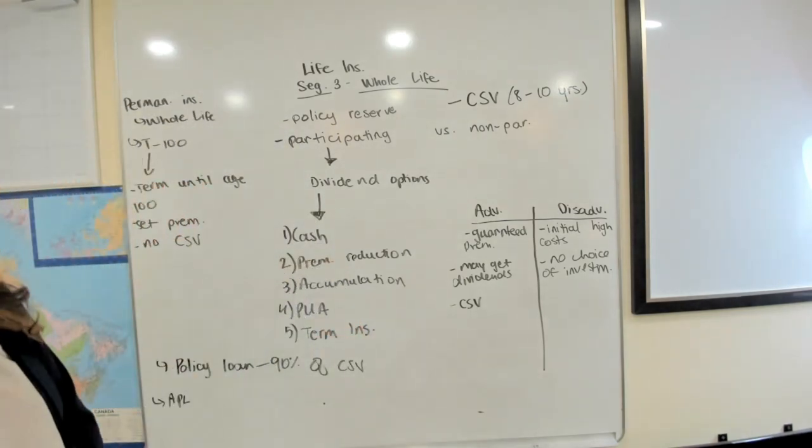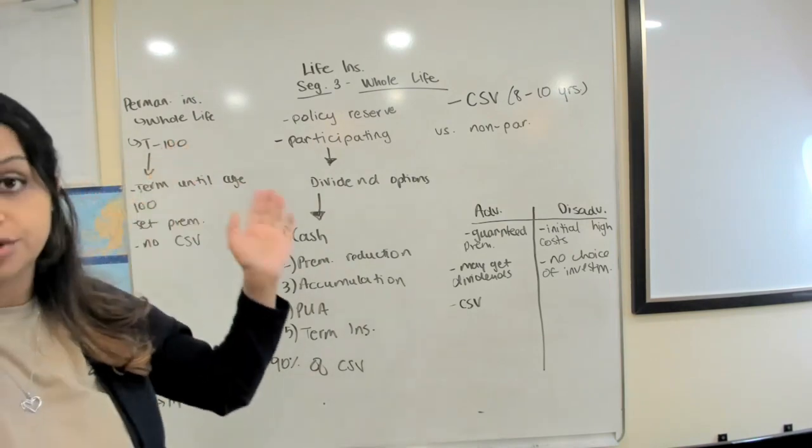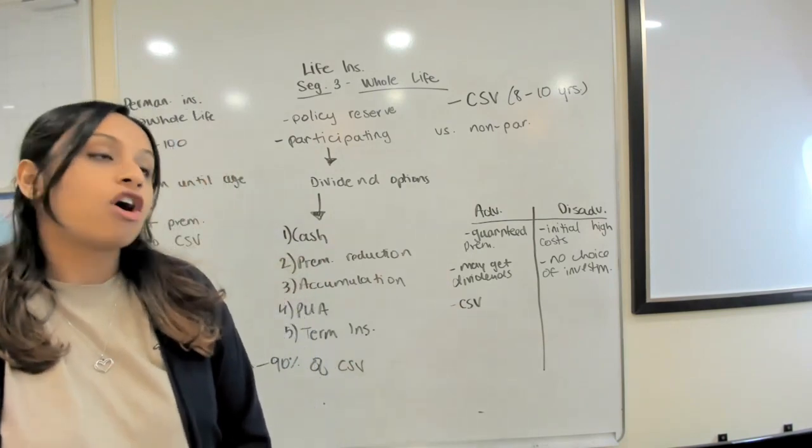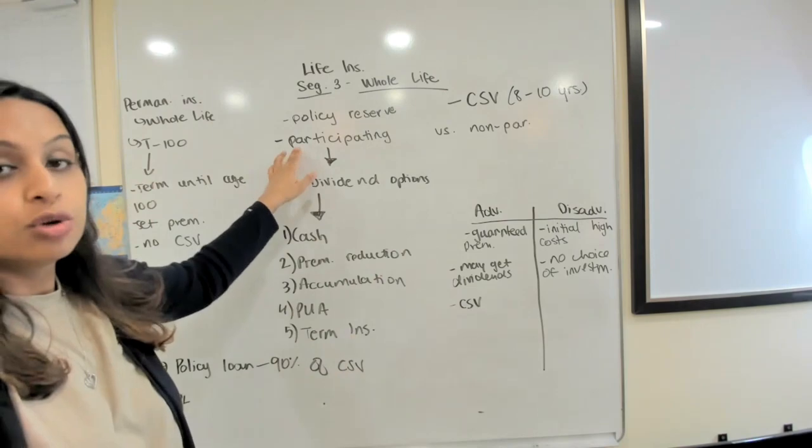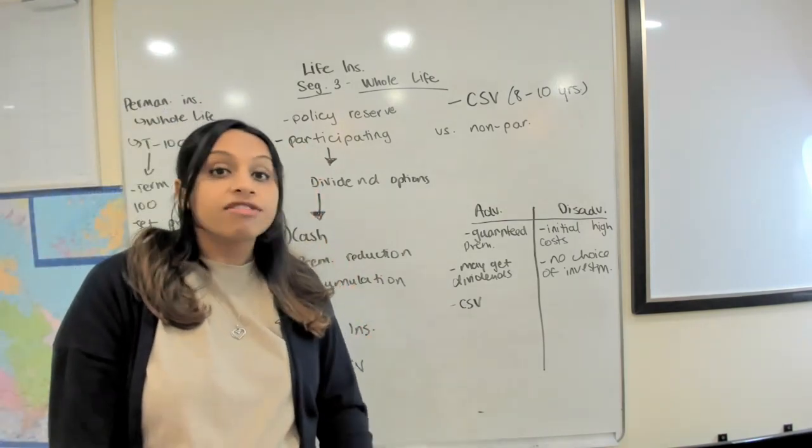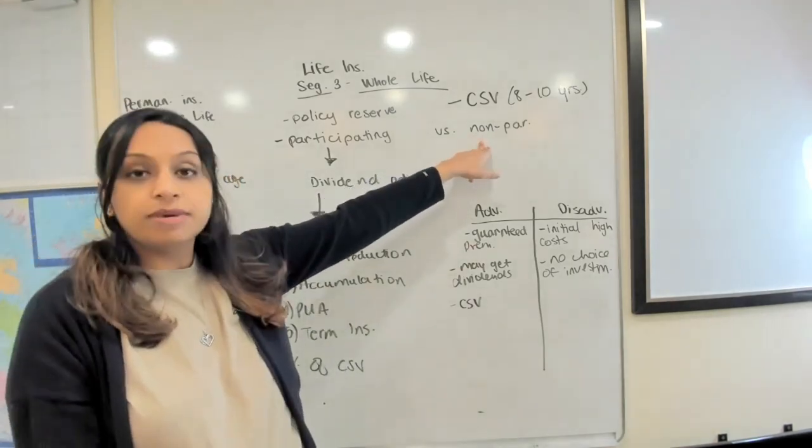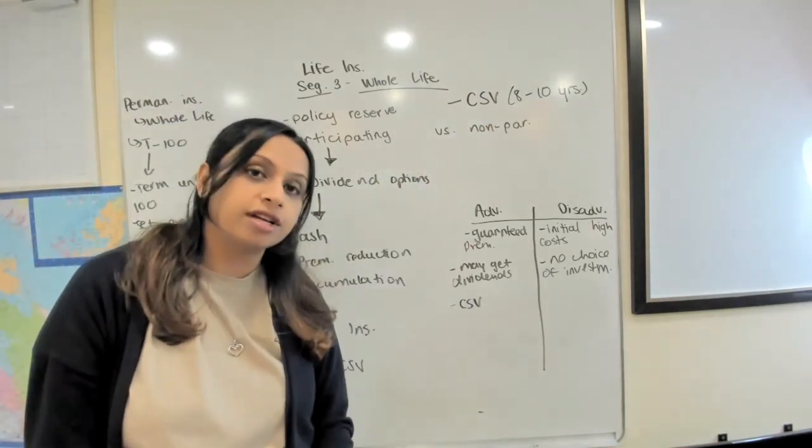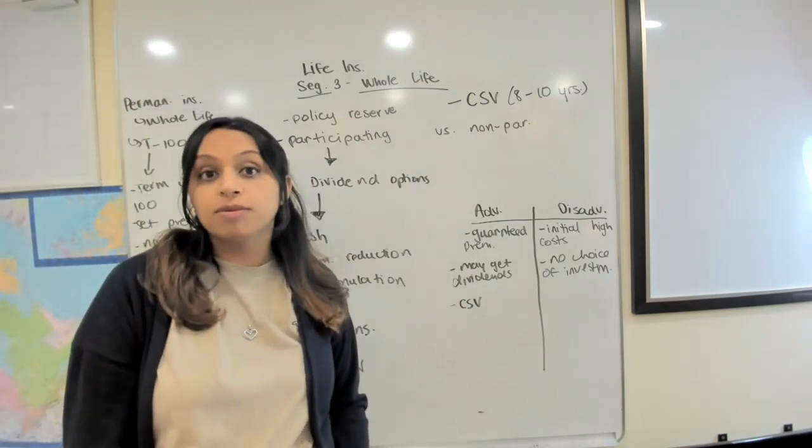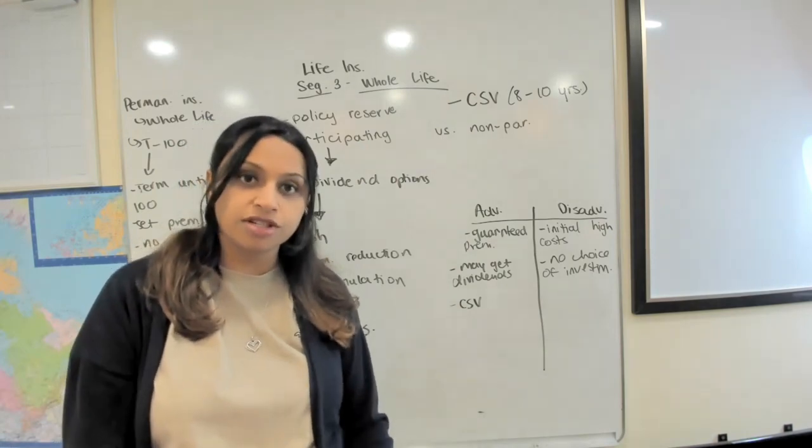And you also have options with whole life. Term 100, even if you go with this option there's no options, you pay premium you're covered that's it. But with whole life you have options. Do you want a participating policy which means you're involved in the insurance company's profits? Or non-participating which means you pay your premium and you're covered and you don't want anything to do with that? Of course if you're participating your premium will be higher so your costs will be a little bit higher if you are participating versus non-participating.